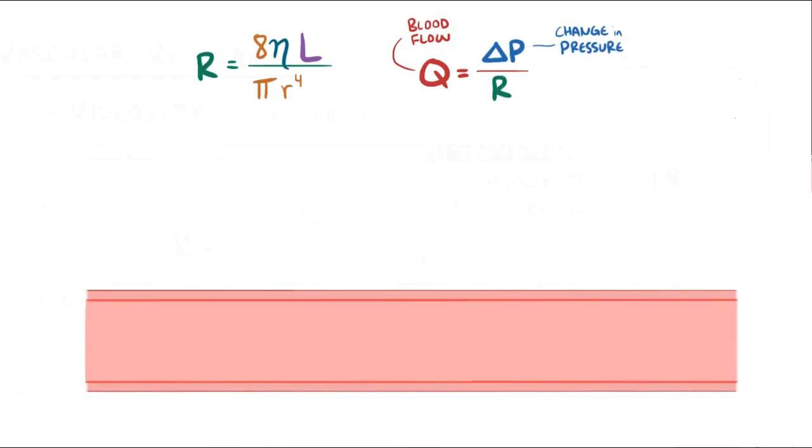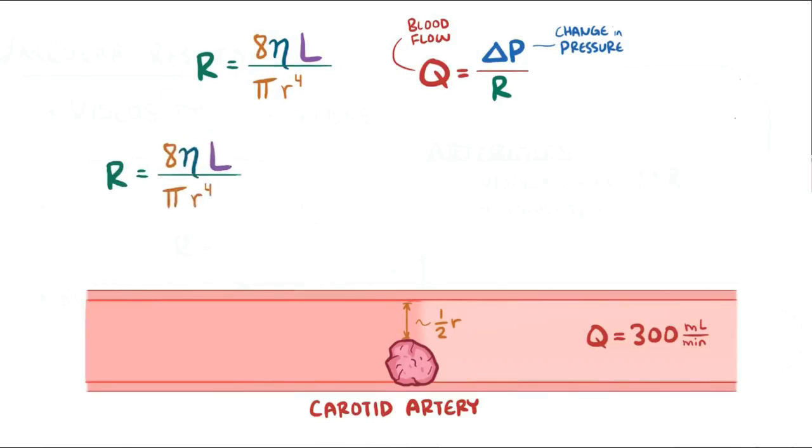So let's apply this to a real-life situation, and let's say that a person has a blood flow of 300 milliliters per minute going through their carotid artery, and then they suddenly develop a blockage of exactly half the artery, which can happen with a stroke. What would happen to blood flow?